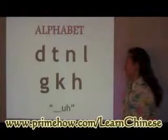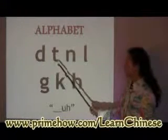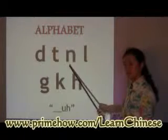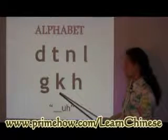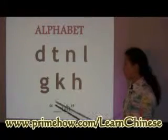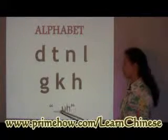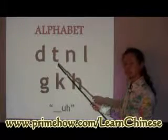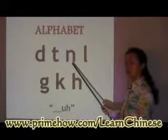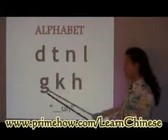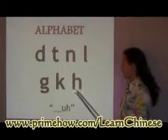The next group has the same kind of ending — like an 'uh' sound, like you're saying 'duh.' You just substitute the first letter in. So you have D, T, N, L, G, K, and H — all sharing that same 'e' ending sound.